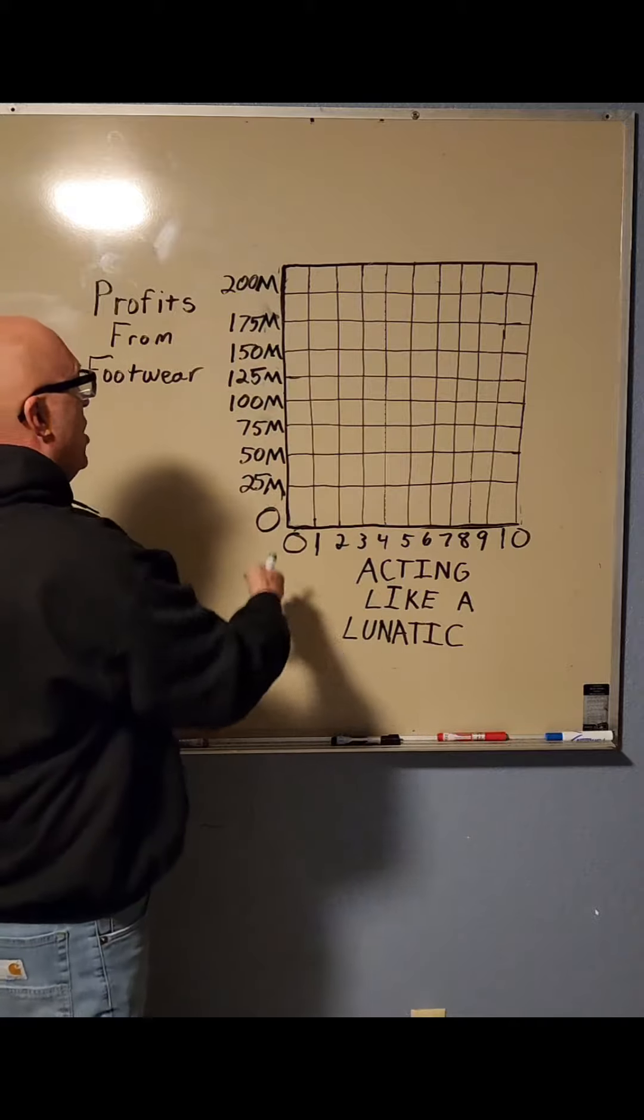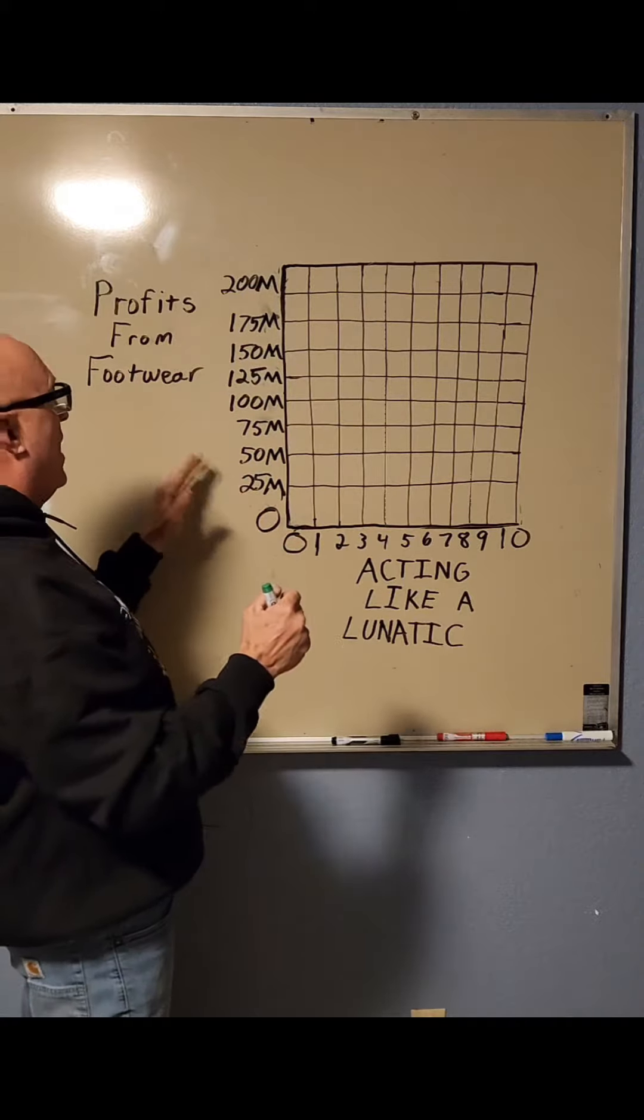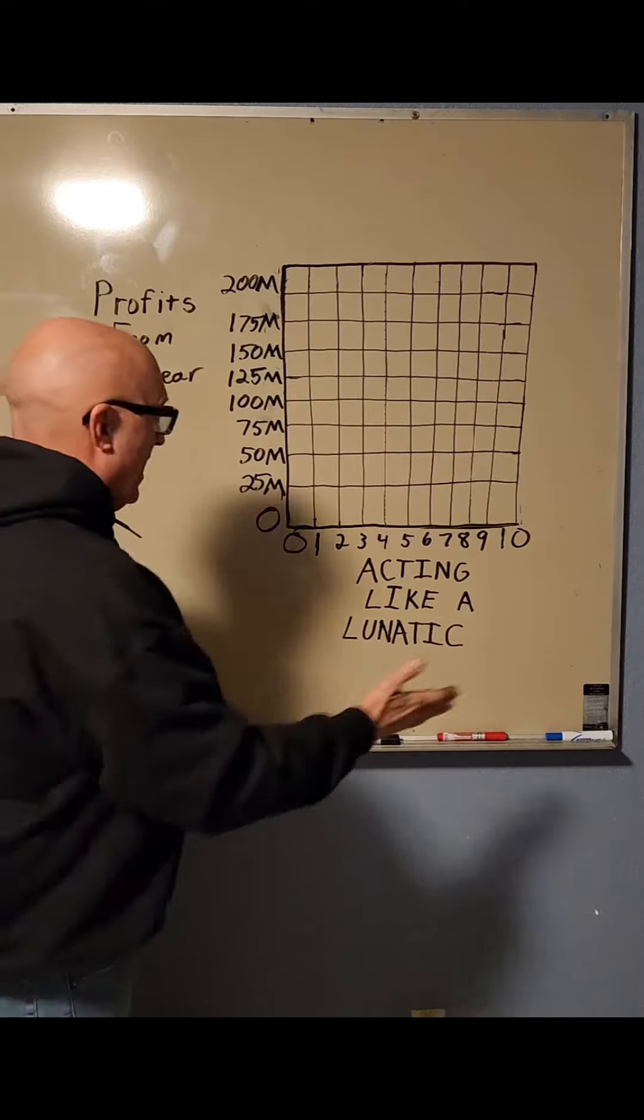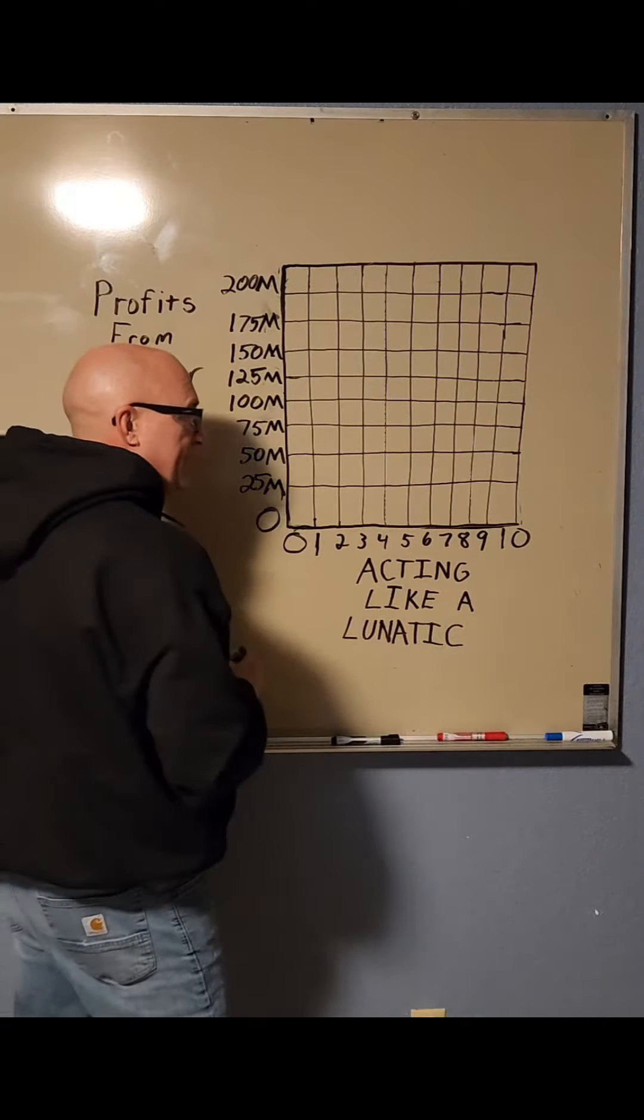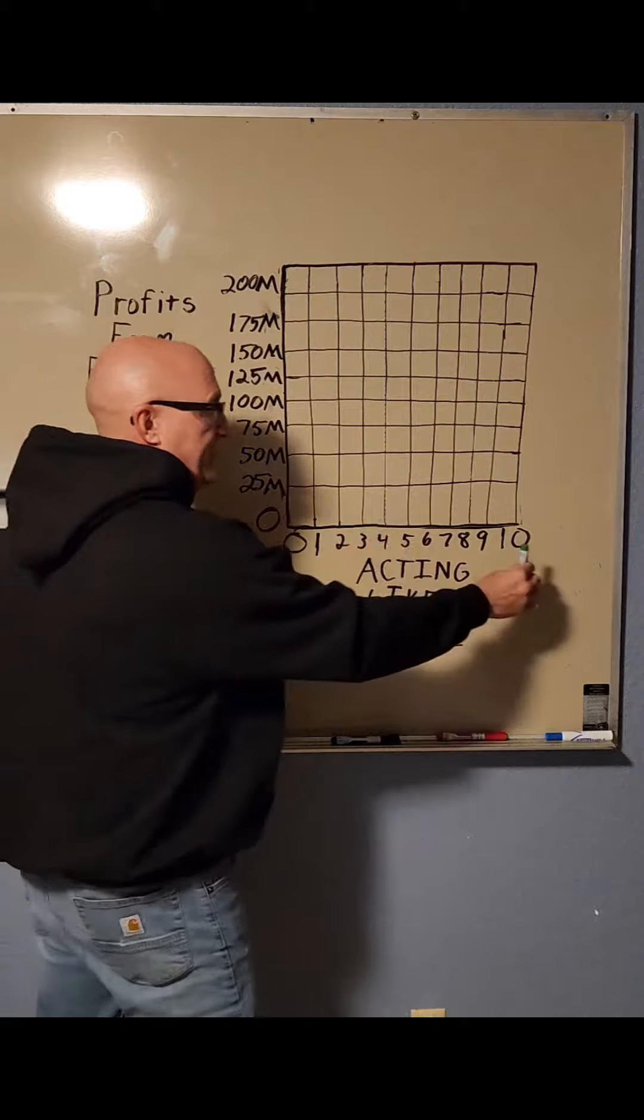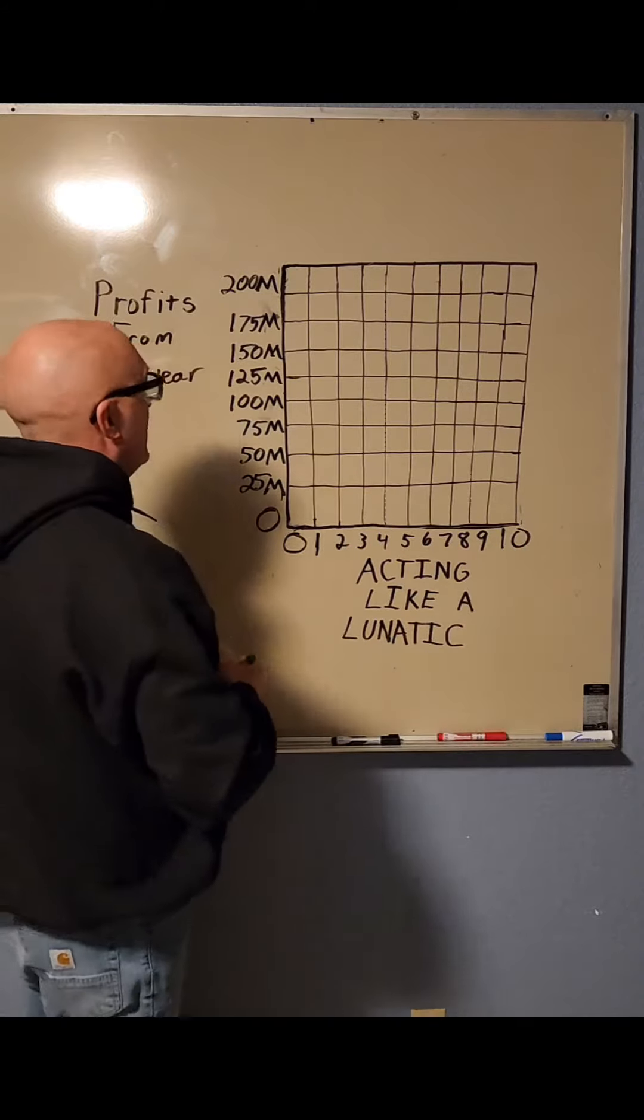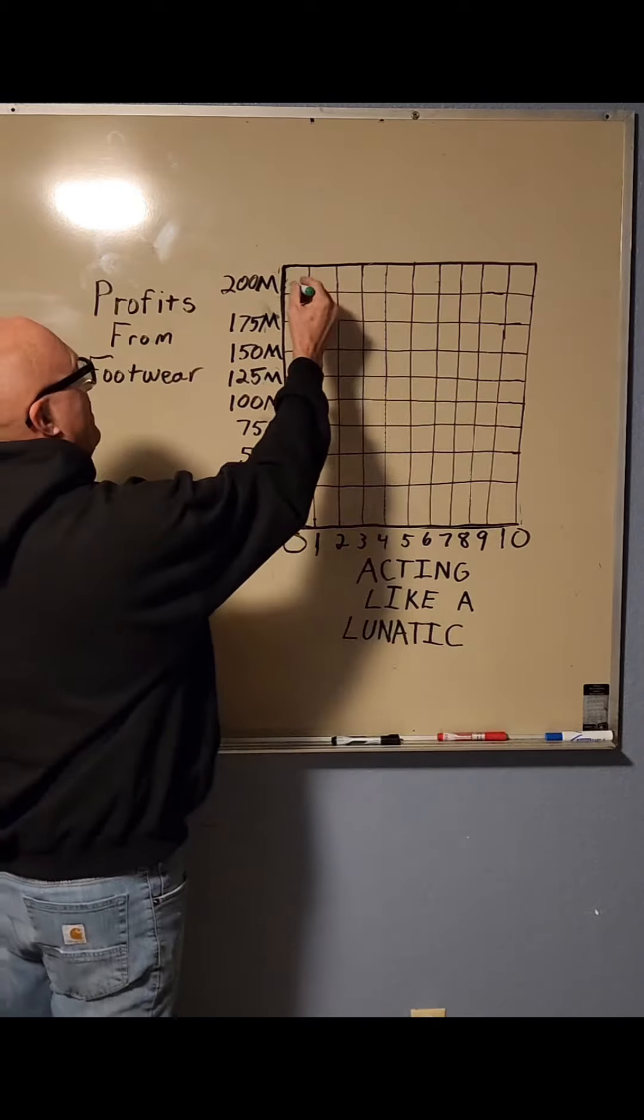Let's say along this axis we have profits from footwear in millions of dollars, and on this axis we have acting like a lunatic, with levels from zero ranging up to a maximum of 10. Let's say you're making profits from footwear at a value of 200 million per year.